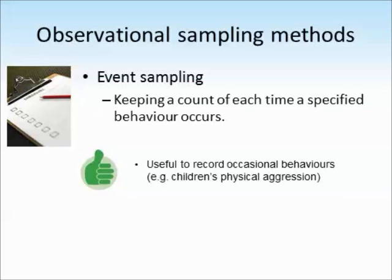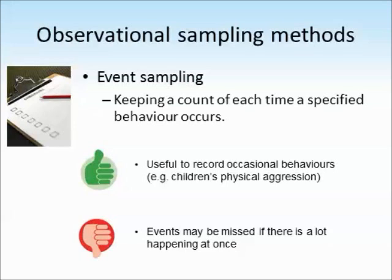Event sampling is really good if we're only recording occasional behaviours — things that don't happen a lot of the time. But if there's a lot going on, it's easy to miss behaviours if lots are happening at once. Say there's a fight and a child is doing all of those things simultaneously — it's difficult to record all of those behaviours and we might miss out on important things.